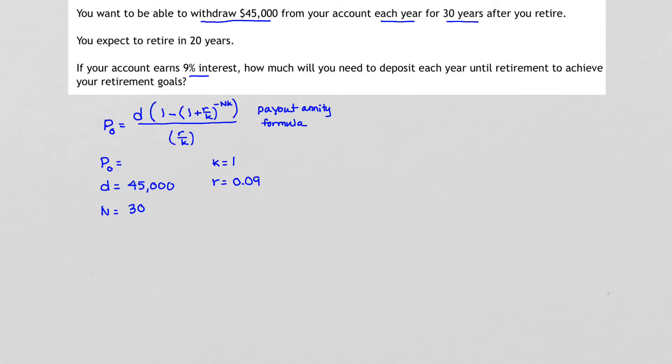The only unknown we have is the amount in our account that we're going to be withdrawing from. That's P sub 0. So let's calculate that first. P0 equals d, which is 45,000, times the quantity 1 minus the quantity of 1 plus R, 0.09, divided by K, 1, all raised to the minus NK, 30 times 1, or just 30, all divided by R, 0.09, over K. Let's plug this into Desmos and figure out what we get.